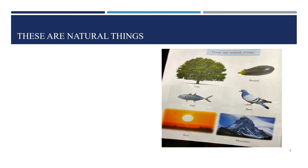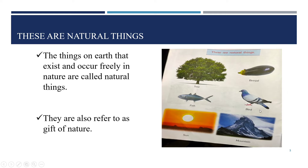These are the natural things — see this picture. Why do we call them natural things? Because they freely occur on our earth. Tree, brinjal, bird, fish, sun, mountain — whatever I am showing in this picture, these are freely occurring on our earth. It is a gift of nature. That is why we call them the natural things.